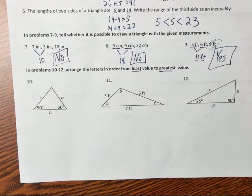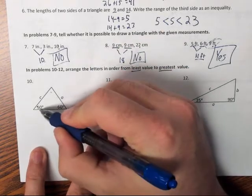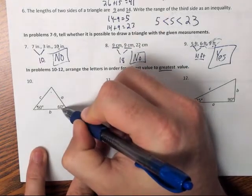So, what we need to do is, first off, figure out how big my third angle is here. Well, 50 plus 60 is 110 degrees.